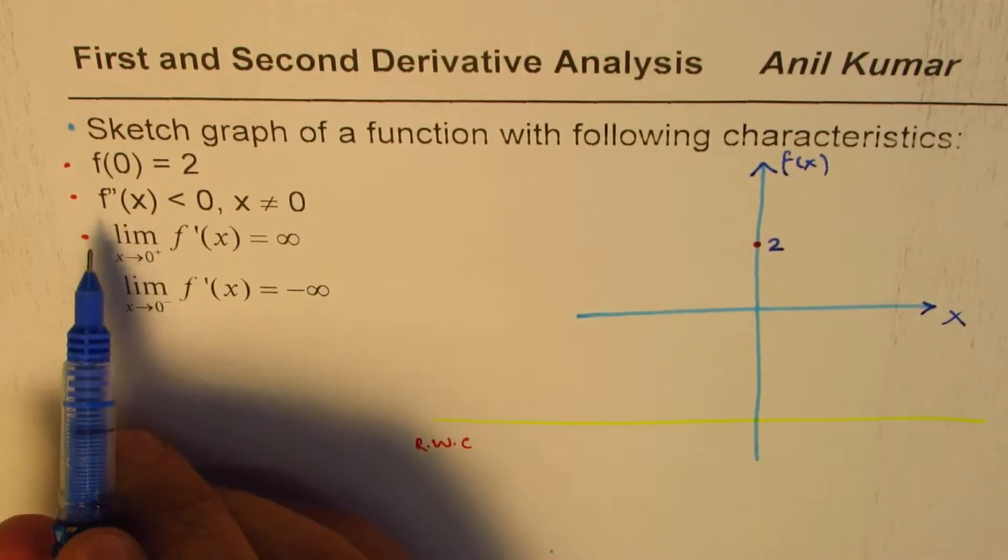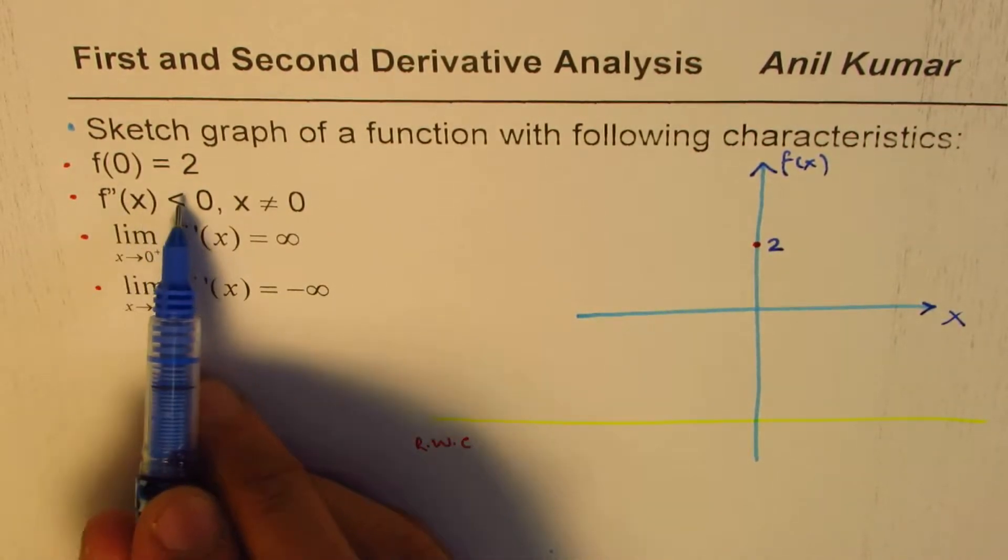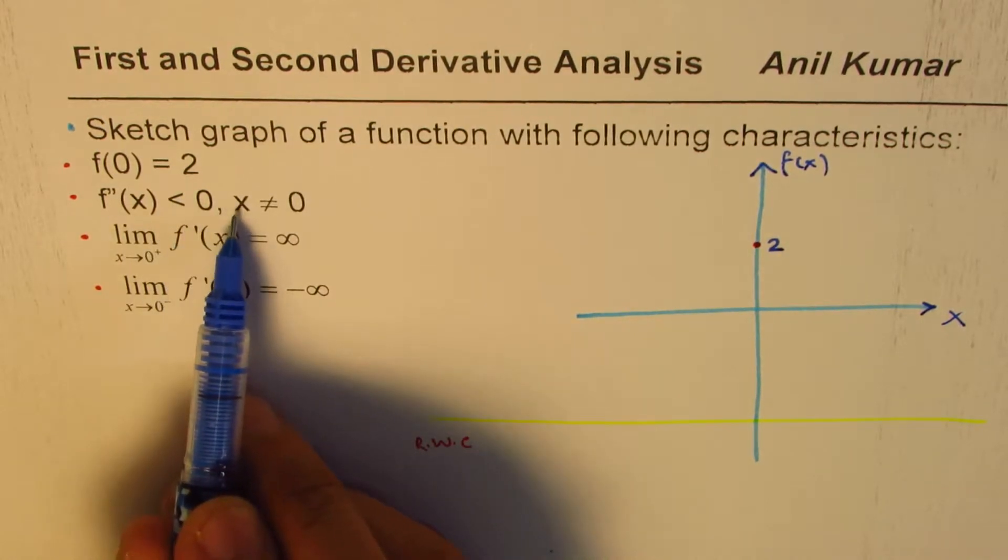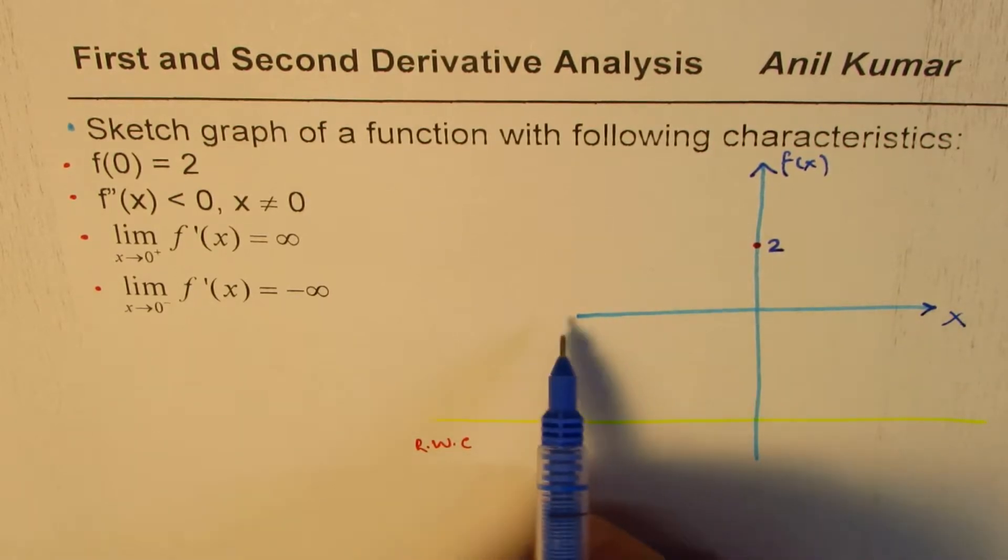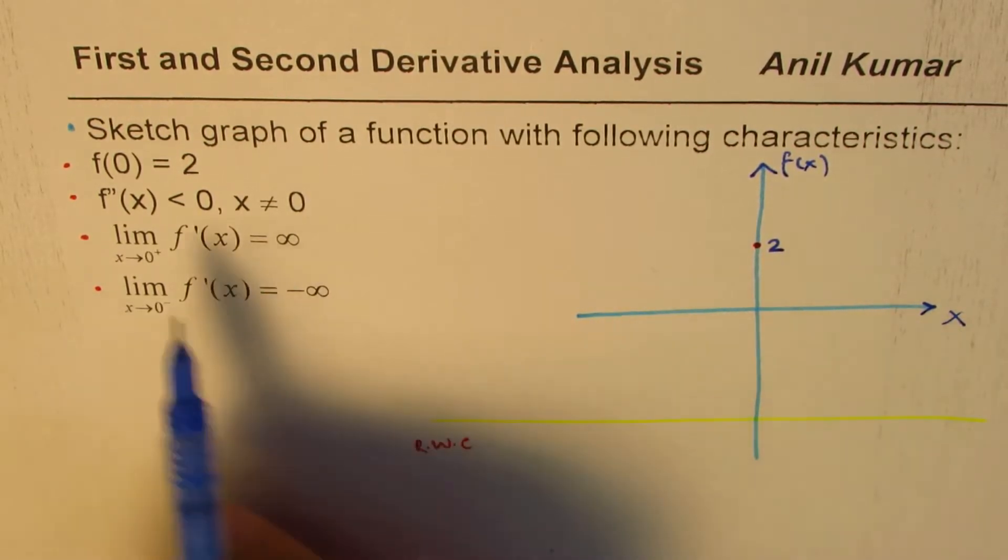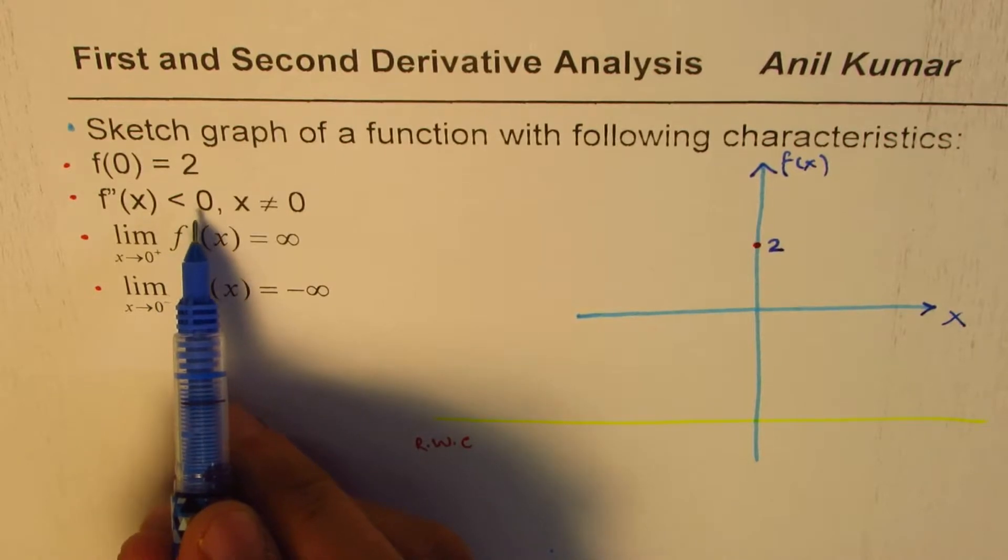Then we are given that the second derivative is less than 0 for x not equal to 0. That means everywhere else, from minus infinity to plus infinity, the second derivative is negative.